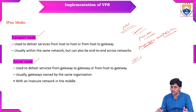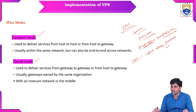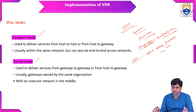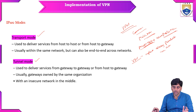VPN is implemented for accessing a private network across a public network — you can access the network privately across the public network. It operates in two types of modes: one is Transport mode, and the second one is Tunnel mode.